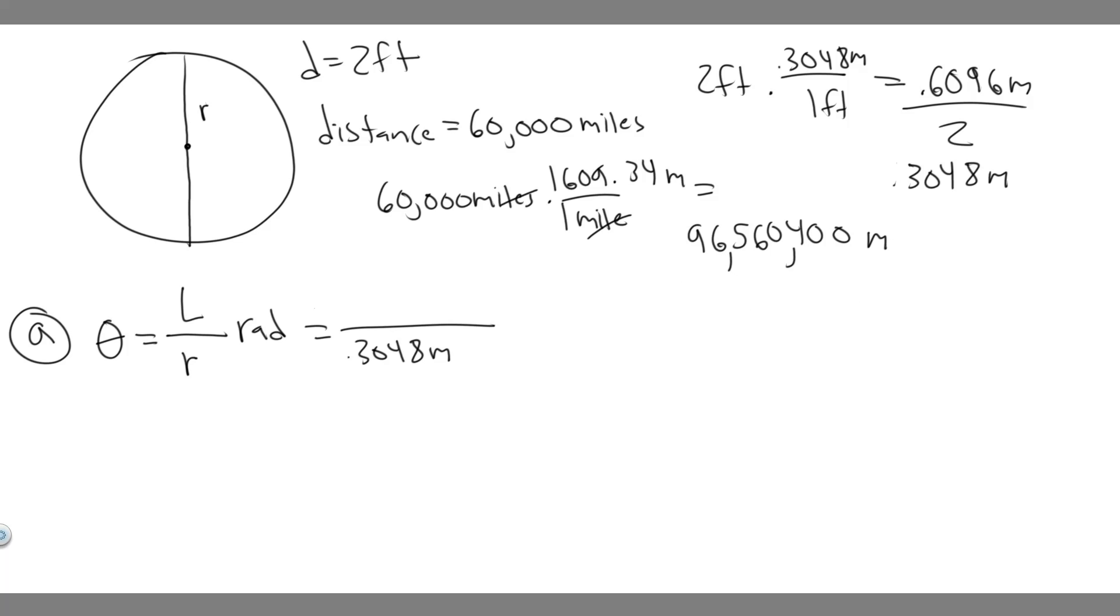So now what we do is just plug it in for the length. So 96,560,400 meters. And so now that they're both in meters, all you have to do is divide, and you'll get it in radians. So plug in your calculator, 96,560,400 divided by 0.3048. And when you do that, you're going to get a big number, it's going to be 316,799,212.6.